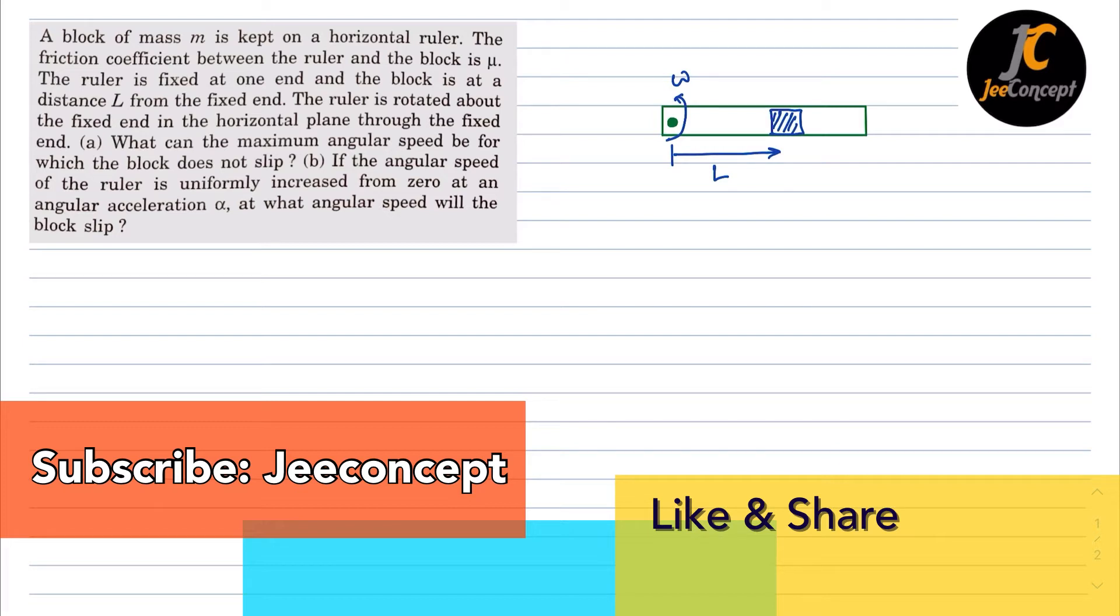The frictional coefficient between the ruler and the block is mu. The ruler is fixed at one end and the block is at distance l from the fixed end.